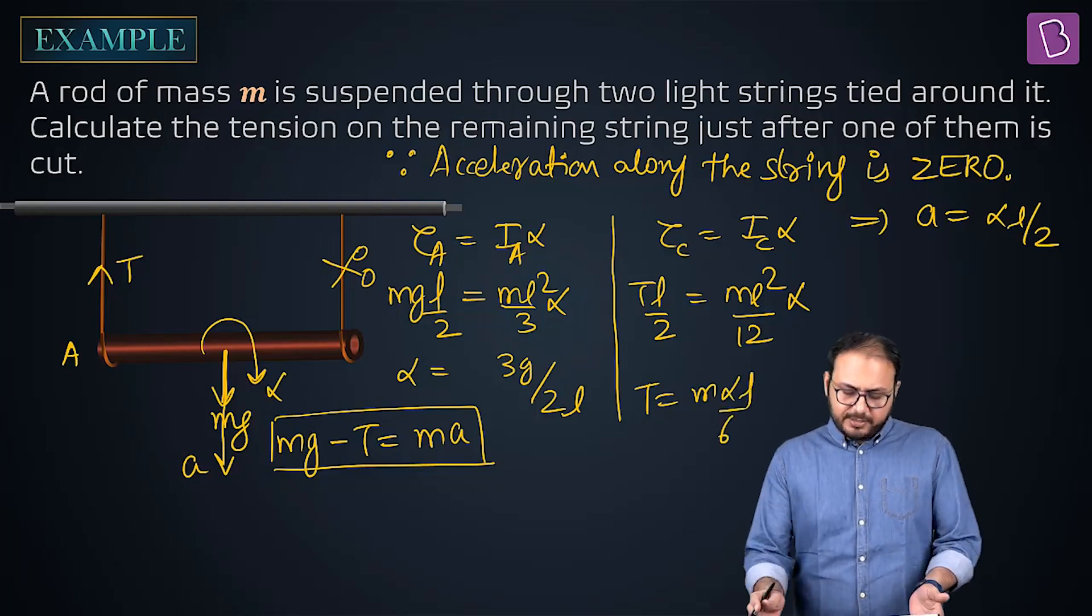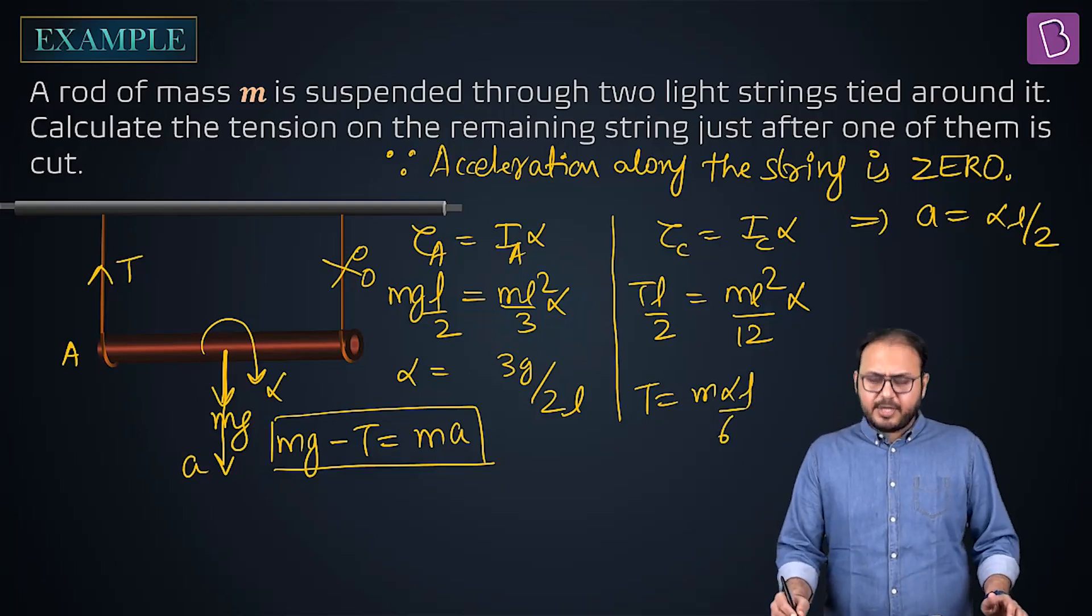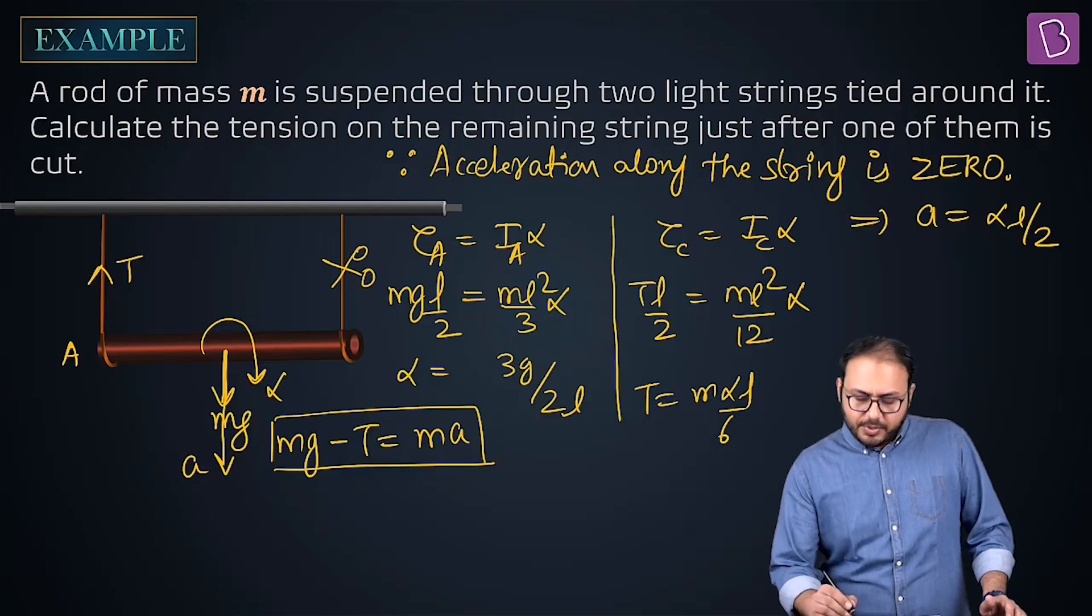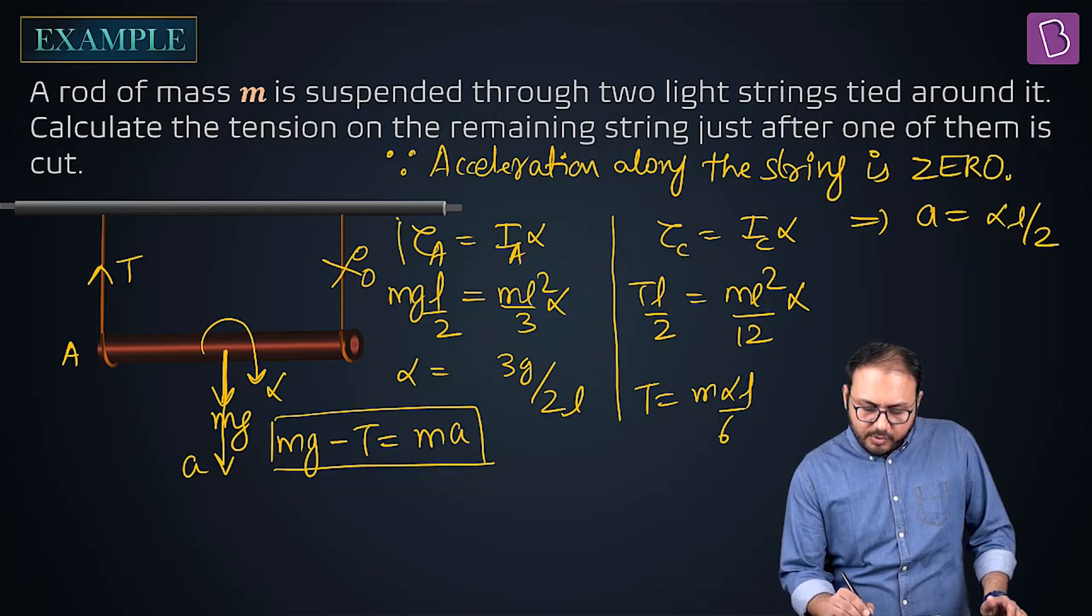Answer if I solve it, let's solve. Alpha equal to 3G by 2L, solve with alpha equal to 3G by 2L or this equation. You will get tension equal to Mg by 4.